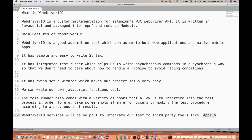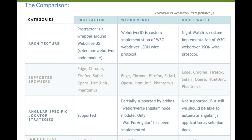There is always the question: we have WebDriver.io, Protractor, and Nightwatch.js available — a lot of tools in the market. These are the three important tools. If you look at the comparison, Protractor came first. I think it was the first JavaScript tool for Selenium — they created a wrapper on top of WebDriver.js and everyone was using it.